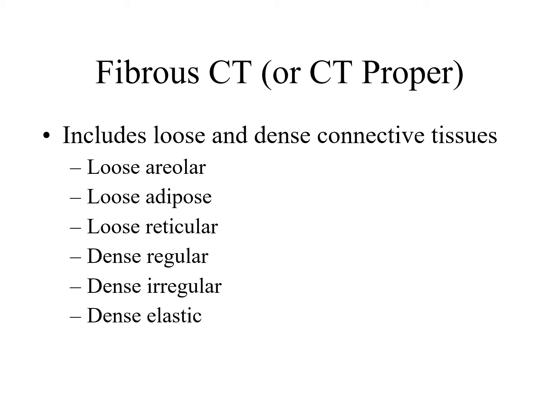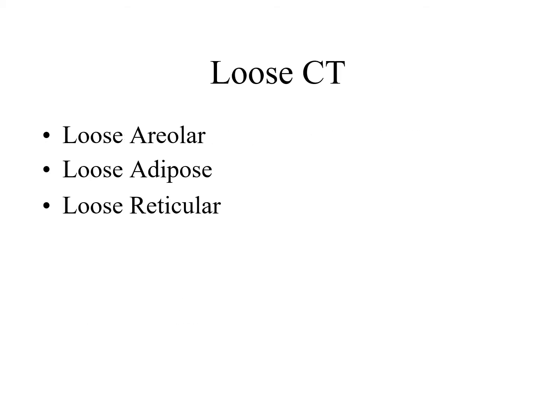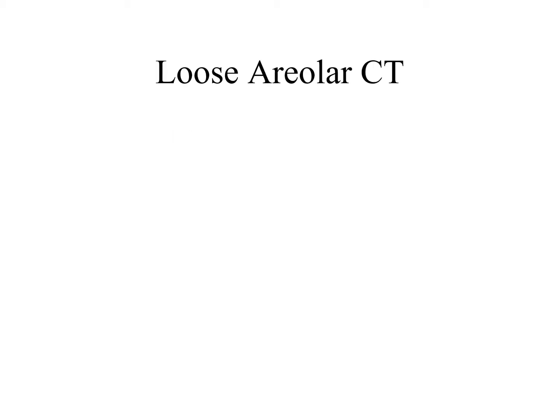The three loose connective tissue types are: loose areolar, loose adipose, and loose reticular. Loose areolar connective tissue is formed by fibroblasts, which grow and make fibers. In fact, all three fiber types — collagen, elastic, and reticular — are found in loose areolar connective tissue.